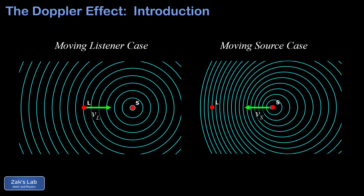So we have two distinct examples of the Doppler effect. In this video, we're going to work out the math for the frequency shift in the moving listener case, then the moving source case. Finally, we'll put both formulas together to get a general formula covering simultaneous motion of both the listener and source, and along the way we'll work simple examples to put our formulas into practice.